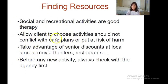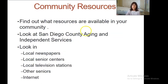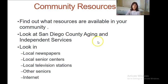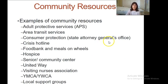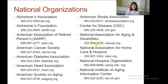There are many resources out there, and we may help the family find them through the internet or phone. The big one is San Diego County Aging and Independent Services, which has a lot of resources on their website. Other sources include the newspaper, the news, and the internet. Examples of resources include the Crisis Hotline, Food Banks, Hospices, Local Support Groups, and National Organizations — they're in your book and on this PowerPoint.